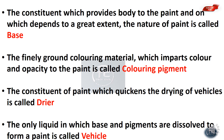The constant of paint which accelerates the drying of the vehicle is called the dryer. Examples of dryers used in paint include: lead acetate and manganese sulphate.